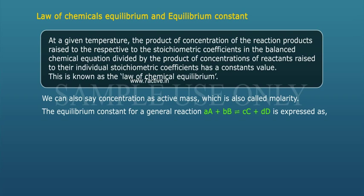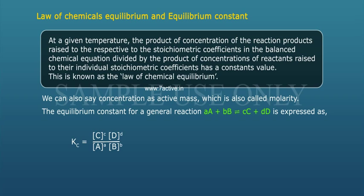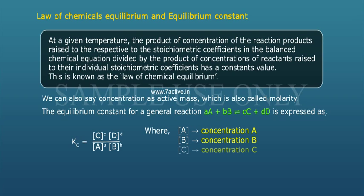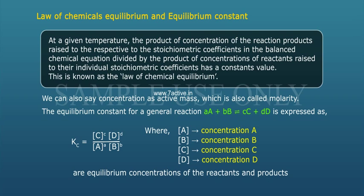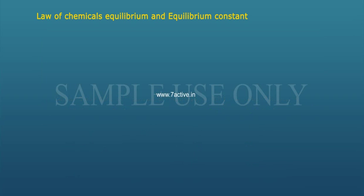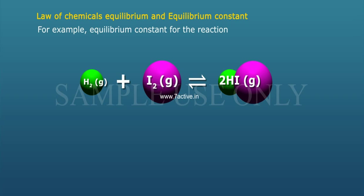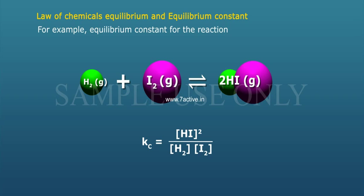The equilibrium constant for a general reaction aA + bB ⇌ cC + dD is expressed as: Kc = [C]^c × [D]^d / [A]^a × [B]^b, where [A], [B], [C], and [D] are equilibrium concentrations of the reactants and products. For example, the equilibrium constant for the reaction H₂(g) + I₂(g) ⇌ 2HI(g) is Kc = [HI]² / ([H₂] × [I₂]).